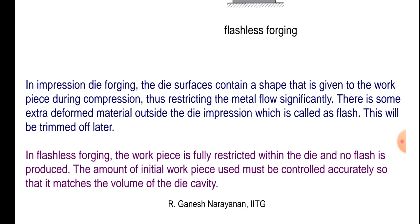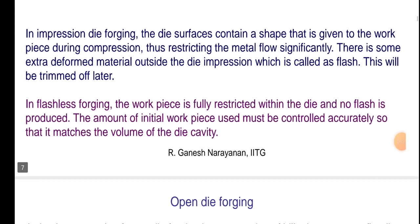There is some extra deformed material outside the die impression, which is called flash — this will be trimmed off later. In flashless forging, the punch is moved with force F and velocity V, the work piece is fully restricted within the die, and no flash is produced. The amount of initial work piece used must be controlled accurately so that it matches the volume of the die cavity.